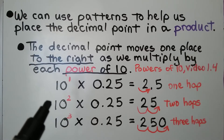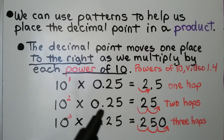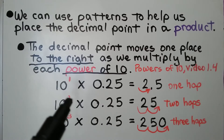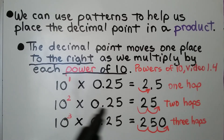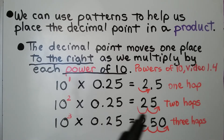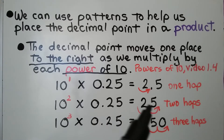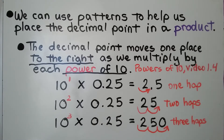We have 10 to the second power times 25 hundredths. We have the decimal point here. We have a 2 exponent, so we're going to have 1, 2 hops. The decimal point will be to the right side of the 5. We'll have 25 whole.